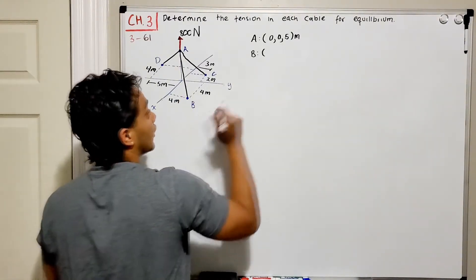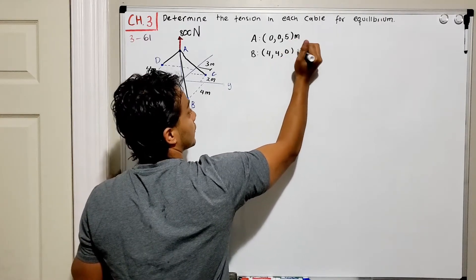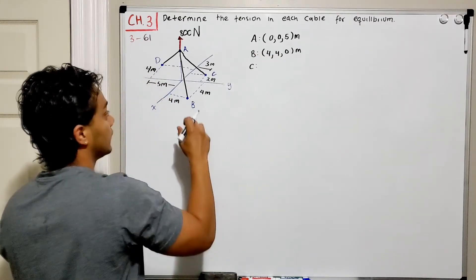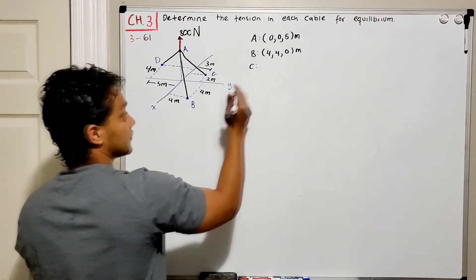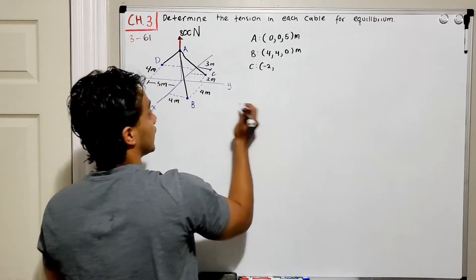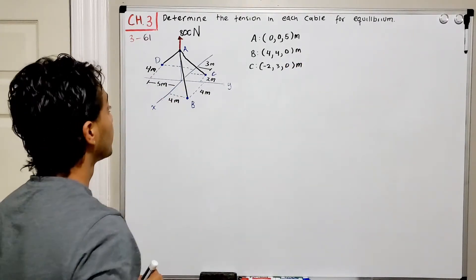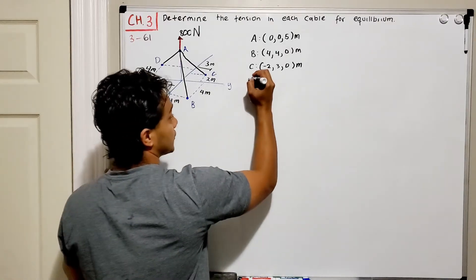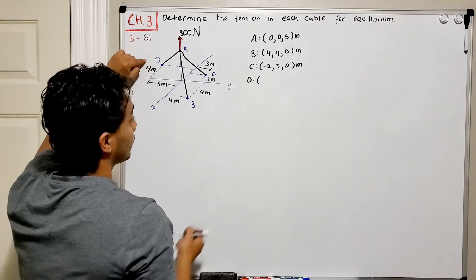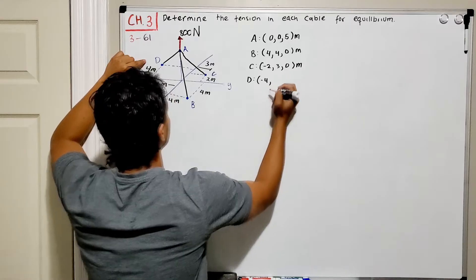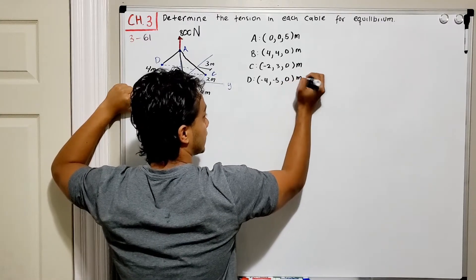and four on the Y, and zero meters in altitude. For point C, we have negative two in the X direction, positive three in the Y direction, and zero for the altitude. For point D, we have negative four in the X direction, negative five in the Y direction, and zero meters altitude.